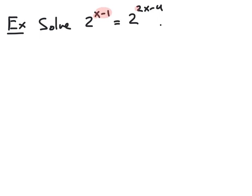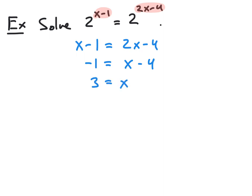Since we have the same base, we look at the two exponents of 2 on each side, and the one-to-one property says that we're going to set those equal to each other. So in this case, we have a resulting equation of x minus 1 equals 2x minus 4. This is just a standard linear equation. We can solve this by subtracting x from both sides, giving negative 1 equals x minus 4, and then add 4 to both sides to get a solution of x equals 3.